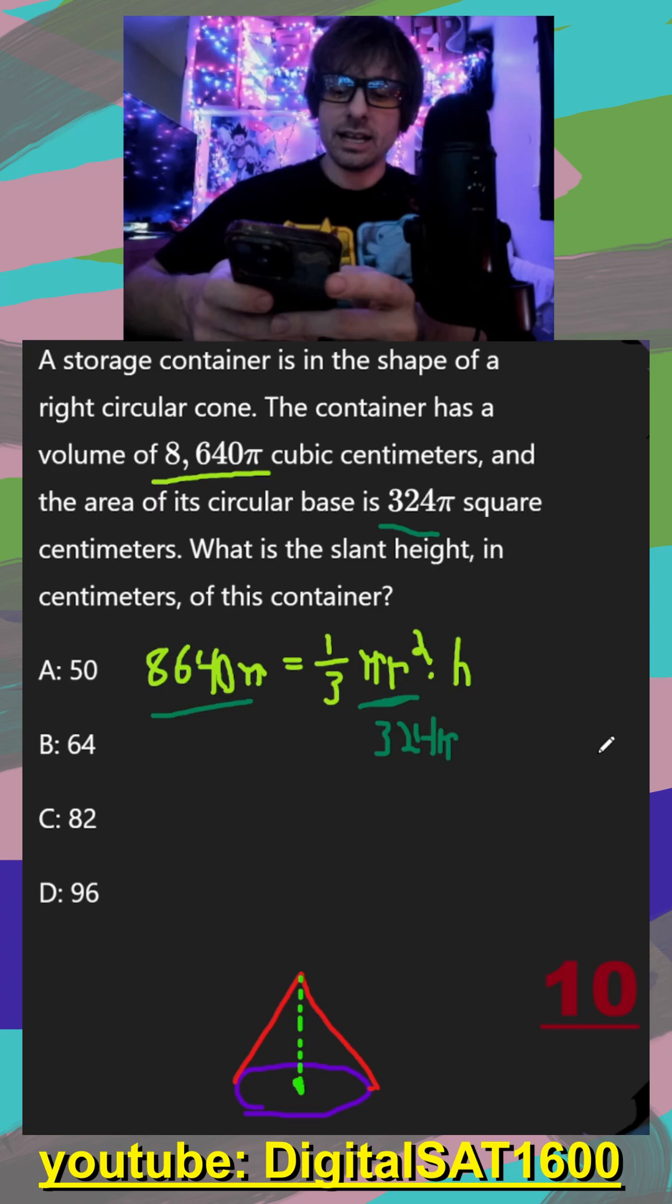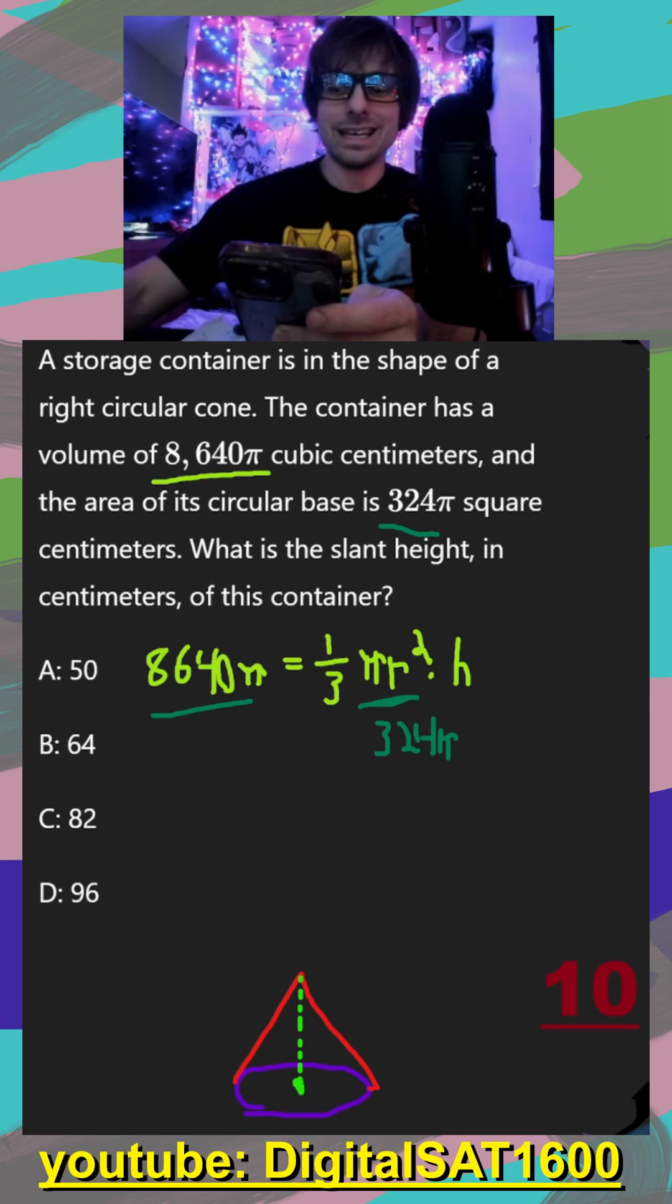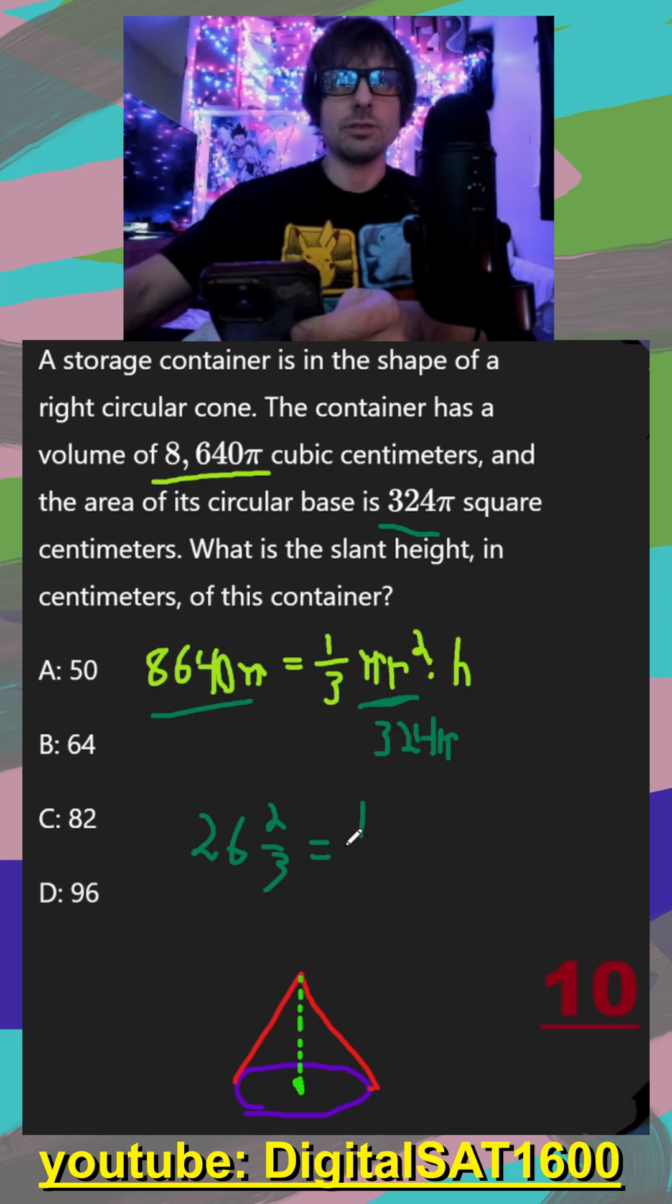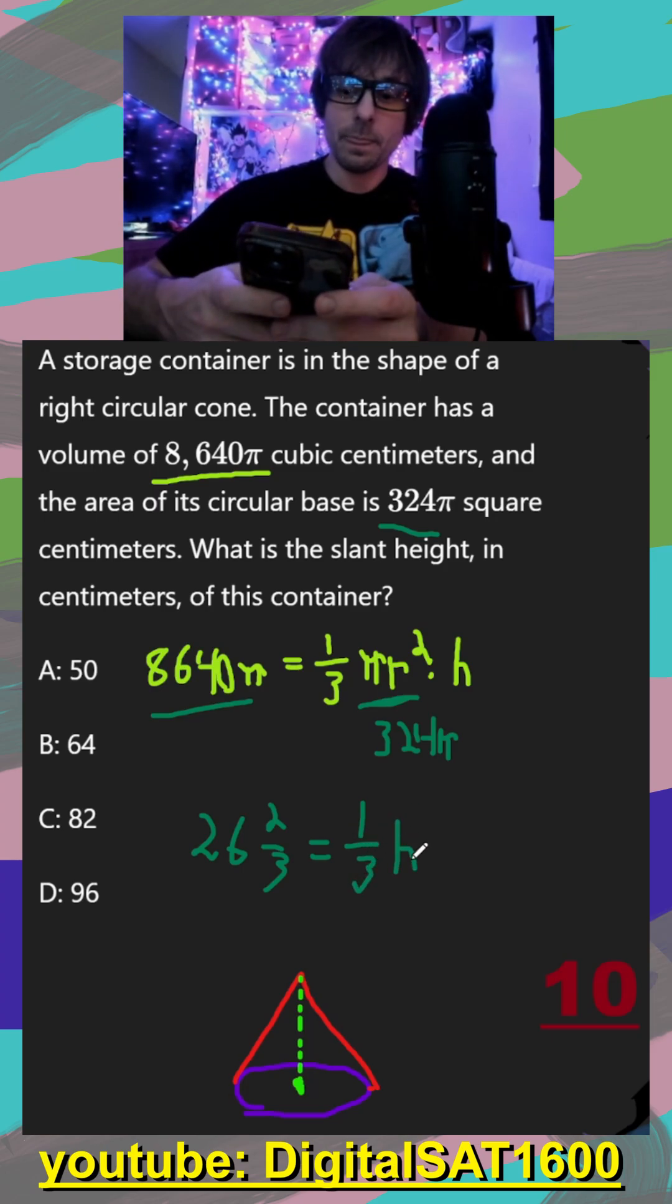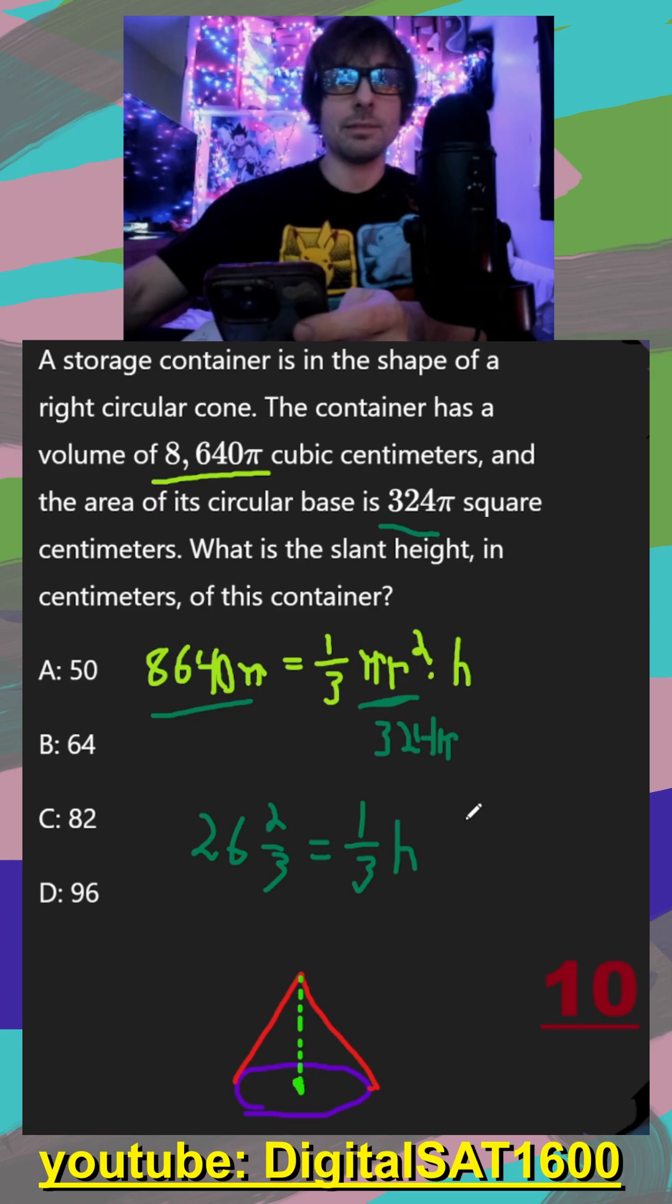So if I divide 8640 divided by 324, because the πs are just going to cancel out, we get not the nicest number, we're going to get 26 and two thirds is equal to one third height. So then I would multiply this number by three. And we are going to get a nice number now, I'm going to get 80 is equal to my height.